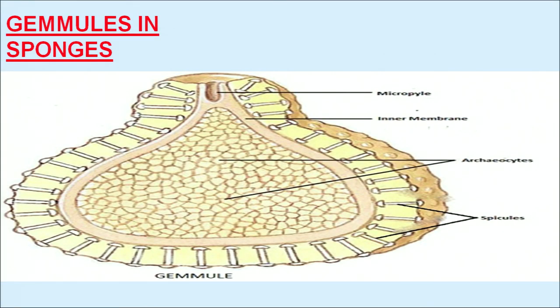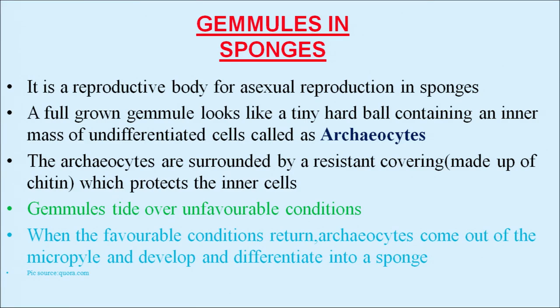Gemmules in sponges: a gemmule has a micropyle which is the opening, an inner membrane, archaeocytes which are balls of cells, and outer spicules which prevent damage. A gemmule is a reproductive body for asexual reproduction in sponges. A fully grown gemmule looks like a tiny hard ball containing an inner mass of undifferentiated cells called archaeocytes, surrounded by a resistant covering made of chitin, which provides hardness and protects the inner cells. Gemmules tide over unfavorable conditions, and when favorable conditions return, archaeocytes come out through the micropyle and develop into a sponge.